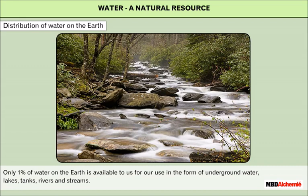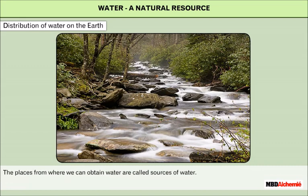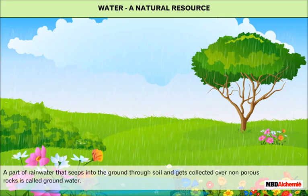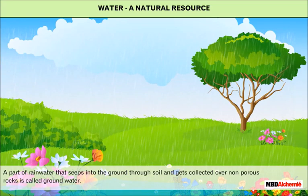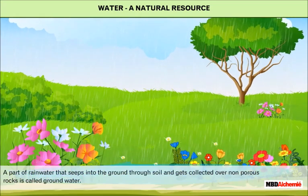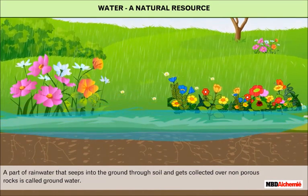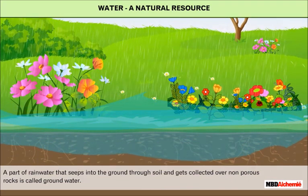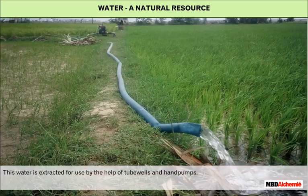The places from where we can obtain water are called sources of water. A part of rainwater that seeps into the ground through soil and gets collected over non-porous rocks is called groundwater. This water is extracted for use by the help of tube wells and hand pumps.